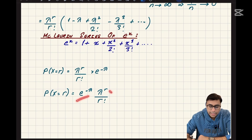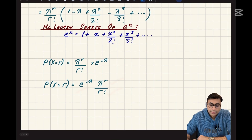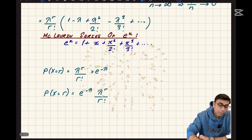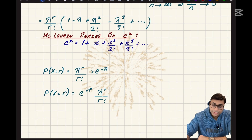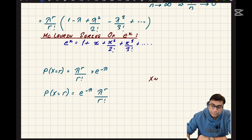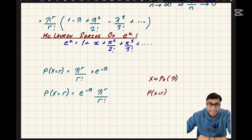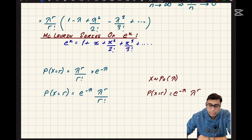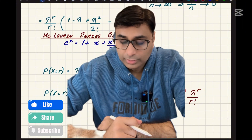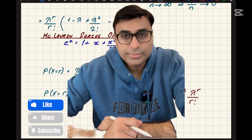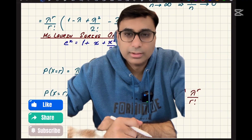Combining everything, we arrive at the Poisson probability formula: P(x = r) = e to the power negative lambda times lambda to the power r over r factorial. So if a random variable x follows a Poisson distribution with mean lambda, you can directly calculate any probability using this formula. If this was helpful, please give a thumbs up and subscribe to the channel — thank you!